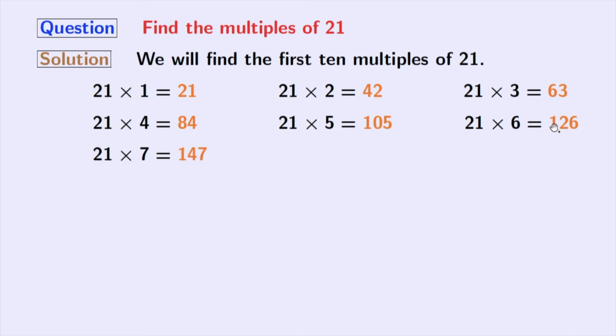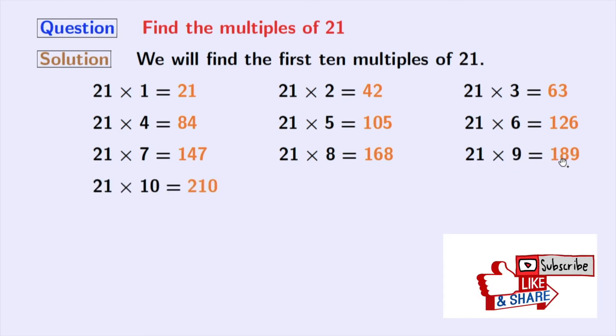If we multiply 21 with 7, we get 147. Multiplication of 21 and 8 gives us 168. Multiplication of 21 and 9 gives us 189. Finally, if we multiply 21 with 10, we get 210.